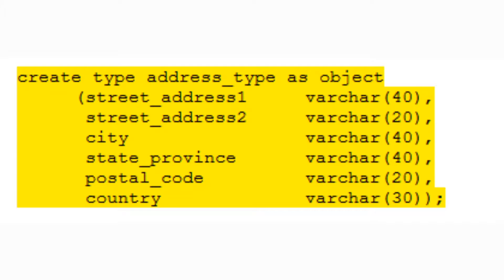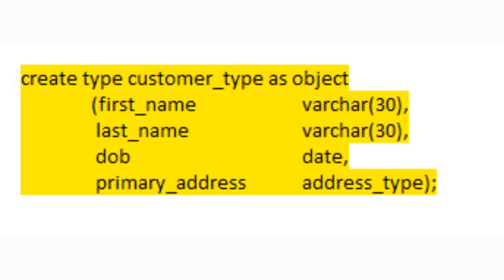Let's start by creating a simple address object. The syntax is real straightforward: CREATE TYPE, object name, keyword OBJECT, and then a list of fields and their associated data types. Now let's try nesting these. We're creating a customer type object with first and last names as VARCHARs, date of birth as a date, and the primary address field is of type address_type, which we just created.